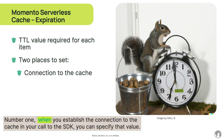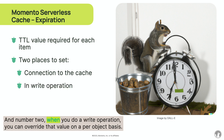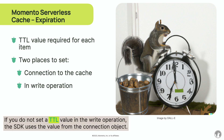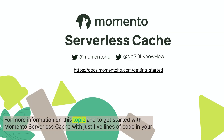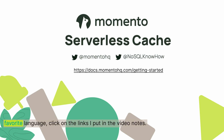Number one, when you establish the connection to the cache in your call to the SDK, you can specify that value. And number two, when you do a write operation, you can override that value on a per object basis. If you do not set a TTL value in the write operation, the SDK uses the value from the connection object. By default, the maximum value for TTL is 24 hours. For more information on this topic and to get started with Momento serverless cache with just five lines of code in your favorite language, click on the links in the video notes.